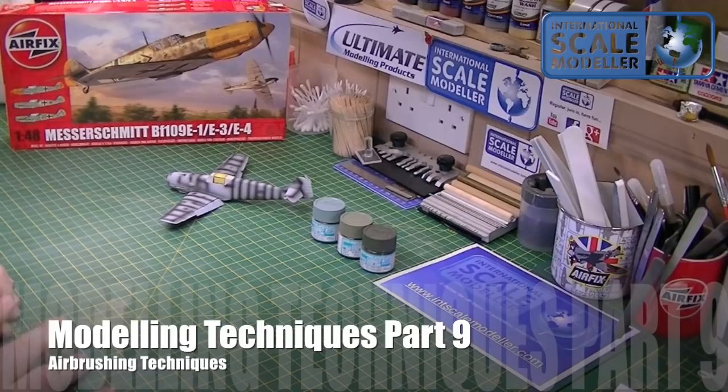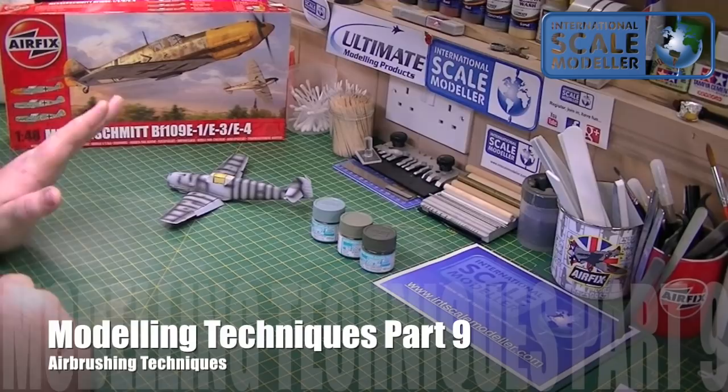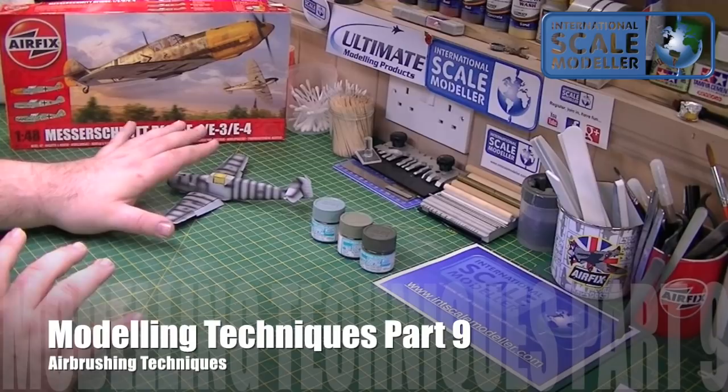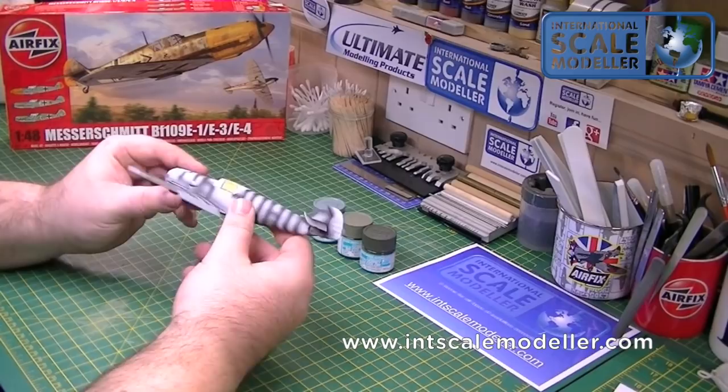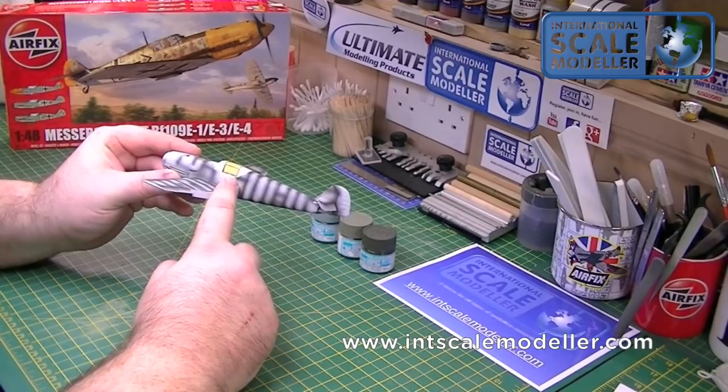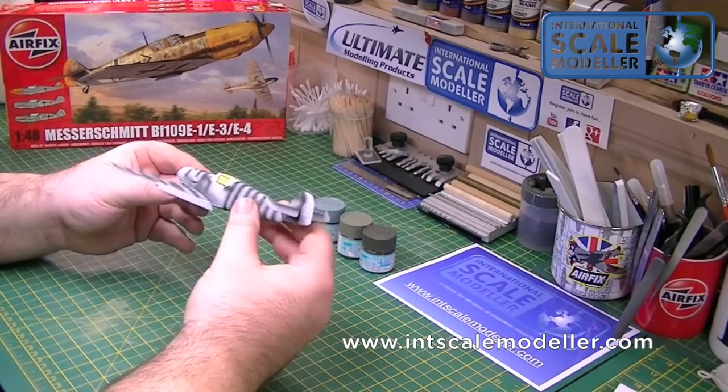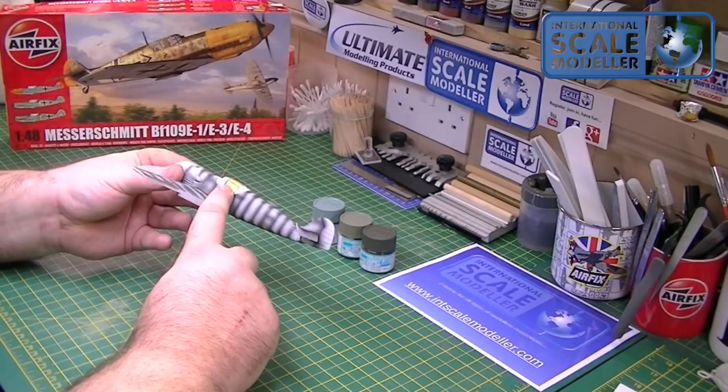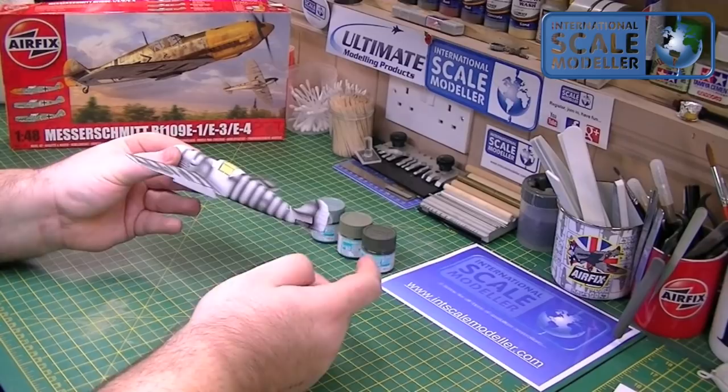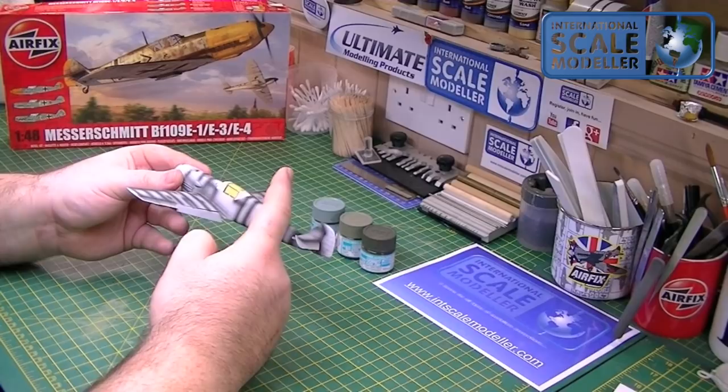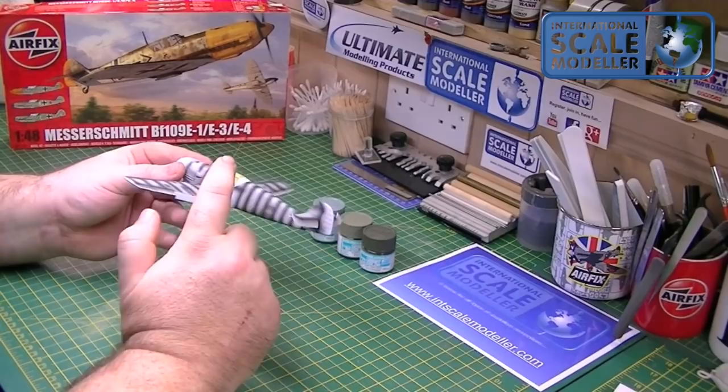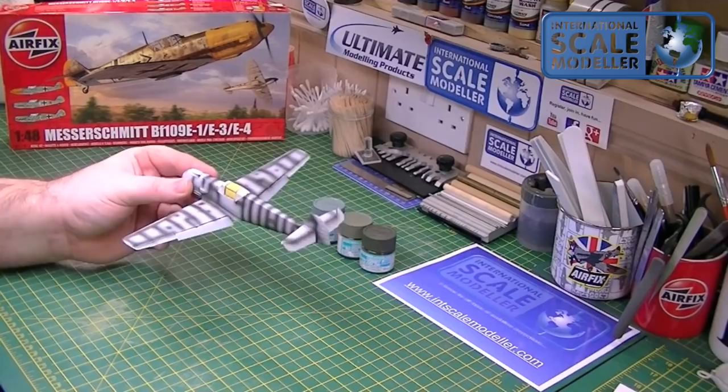Hi everyone, welcome to part 9 of our International Scale Modeller Techniques guide. Today I'm covering airbrushing techniques on our Airfix 1:48 Messerschmitt Bf 109. In the last part I'd lost a canopy, so I sent an email to Airfix the following day. Within 5 days I had a replacement part free of charge. Fantastic customer care, you really can't fault them on that. I've rematched it up and glued it back in position.